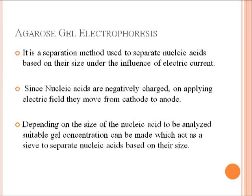The other method is agarose gel electrophoresis. Agarose gel electrophoresis is a separation method which can be used to separate nucleic acids based on their size and the influence of electric current. Since nucleic acids are negatively charged, in an applied electric field they move from cathode to anode. Depending on the size of the nucleic acid to be analyzed, a suitable gel concentration can be made which acts as a sieve to separate the nucleic acid.